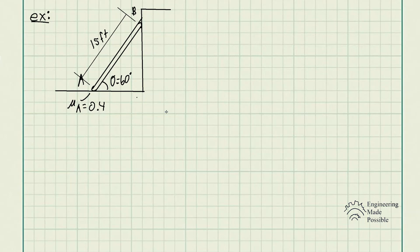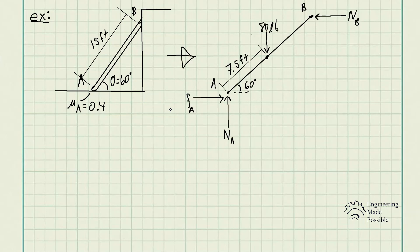Let's go ahead and draw the free body diagram of this ladder. At point B we just have the reaction force — the normal force at point B. We have the weight of the ladder being 80 pounds, and since it is uniformly distributed we assume it acts at the center of mass, seven and a half feet from the bottom. At point A we have the frictional force FA and the normal force NA, with the ladder at 60 degrees.